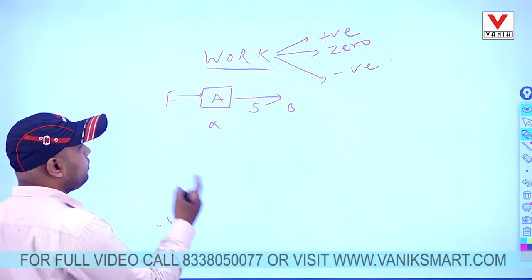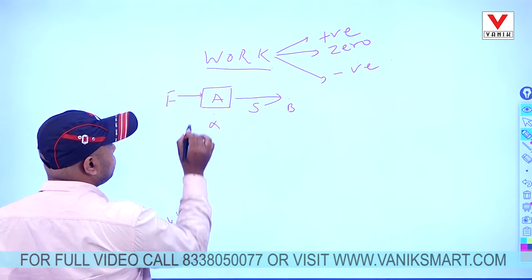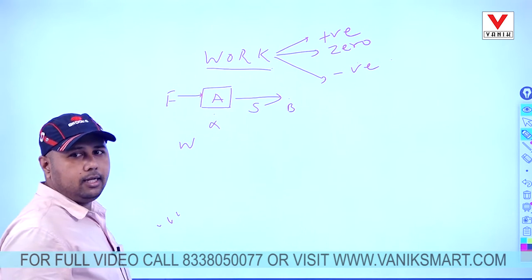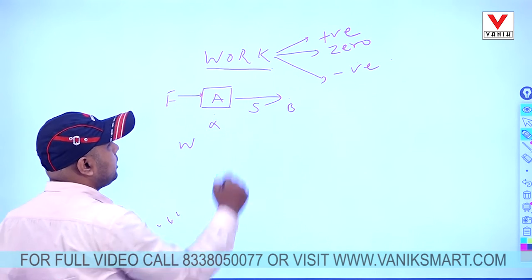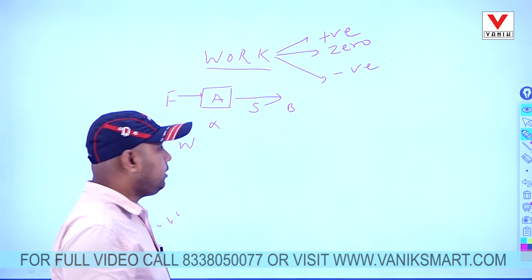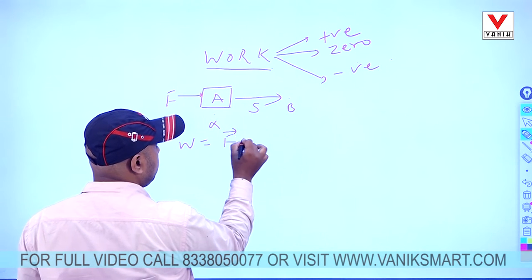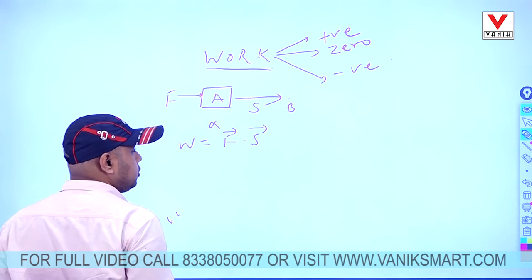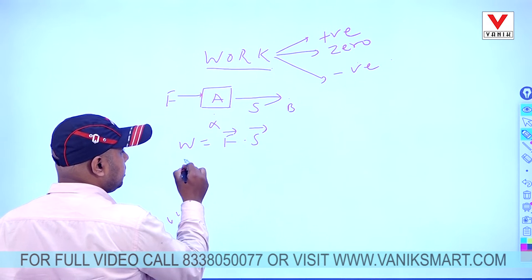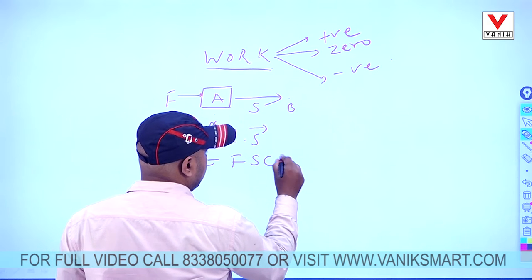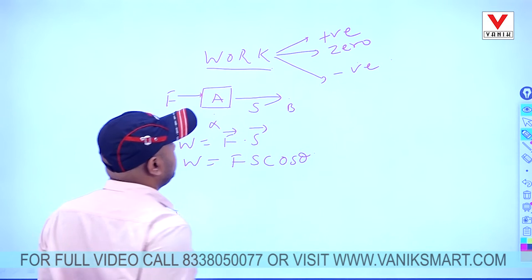So positive work, how do we define positive work? That is when the displacement of the body is along the direction of applied force, then we say that the work done is a positive work. And the normal expression for work, we write it as the dot product of force and displacement. If you want to expand this, or if you want to simplify this dot product, it is simply F·S·cosθ.